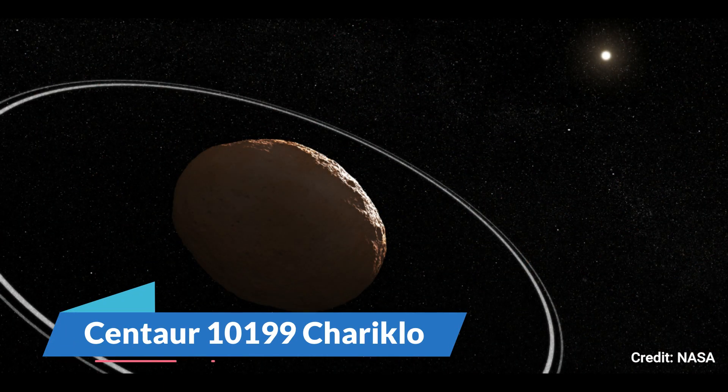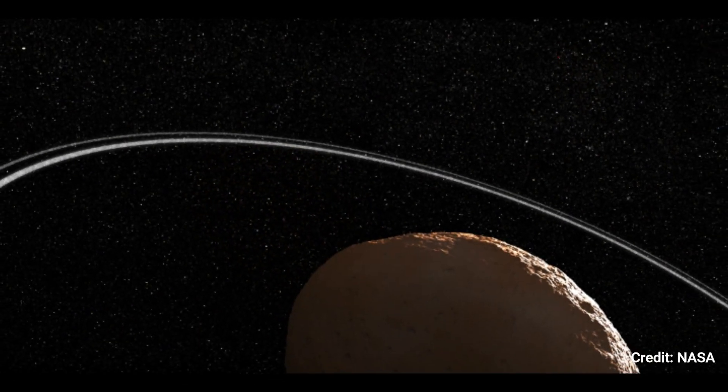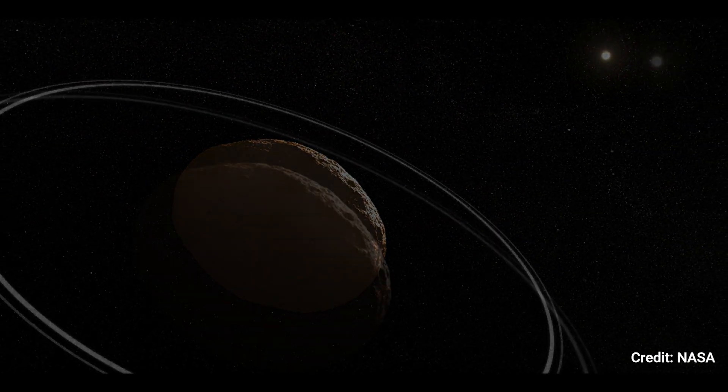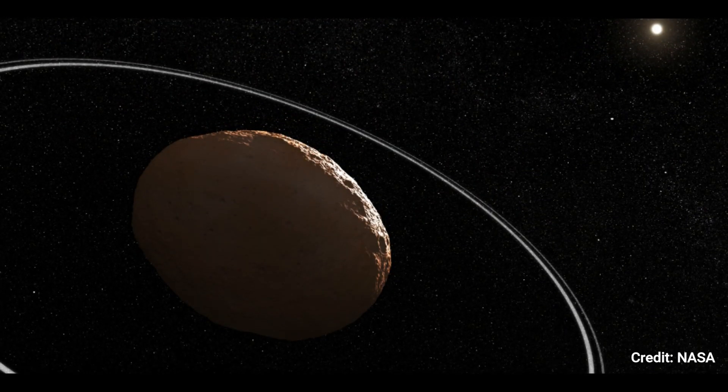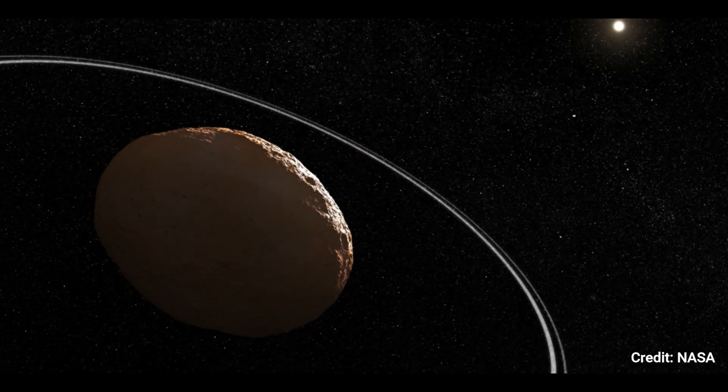Number 10. Centaur 10199 Chariklo. Based on our present knowledge, this image depicts the centaur Chariklo and its rings. Chariklo is the largest known centaur, located more than 2 billion miles away between Saturn and Uranus' orbits.